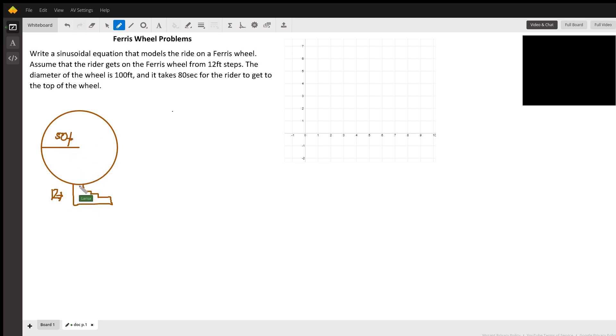We start from the bottom at time zero and go up. At 80 seconds, we're at the top. At 40 seconds and 120 seconds, we're in the middle, and at 160 seconds we return to the bottom. That will make one full revolution.